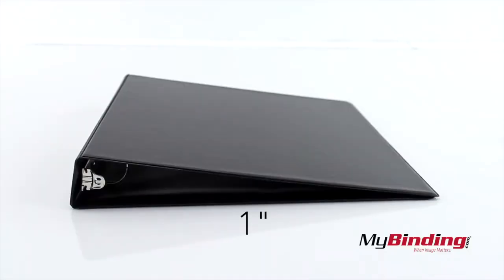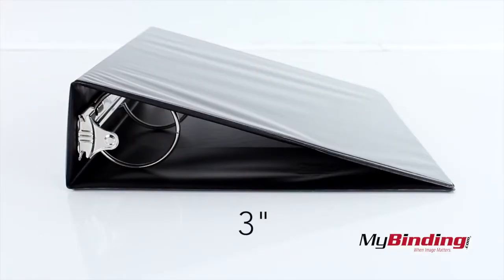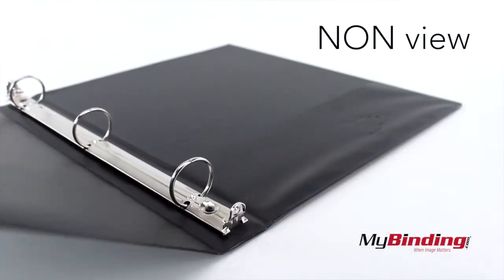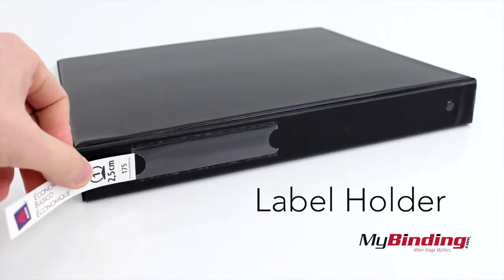They come in several sizes ranging from half an inch to three inches. The non-view binder is quite simple, though there is an option for a label holder on the side.